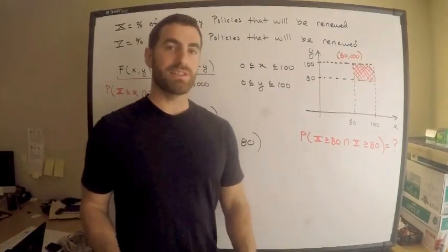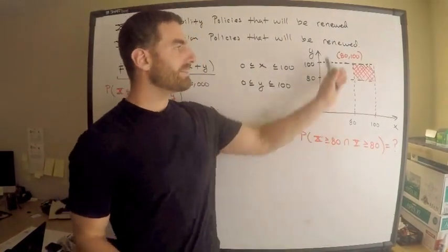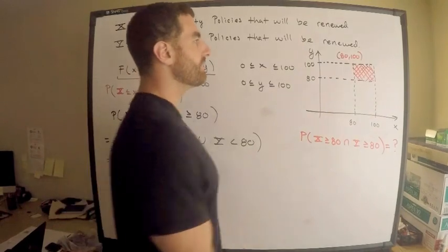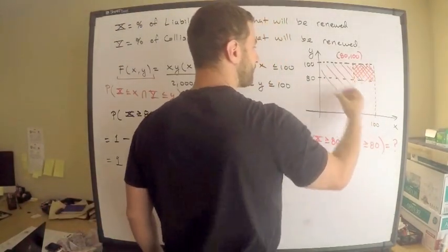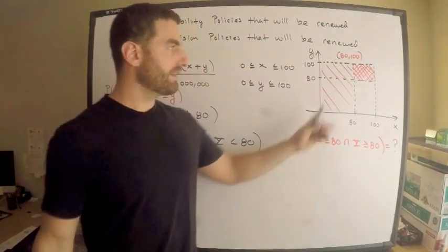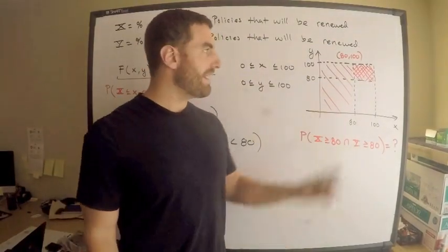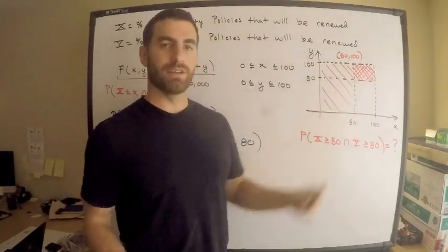Why don't I compute, using the CDF, the probability that X is less than 80 and Y is less than 100? What will that give me? That will give me this. That's the probability, what I just shaded, is X less than 80, Y less than 100.